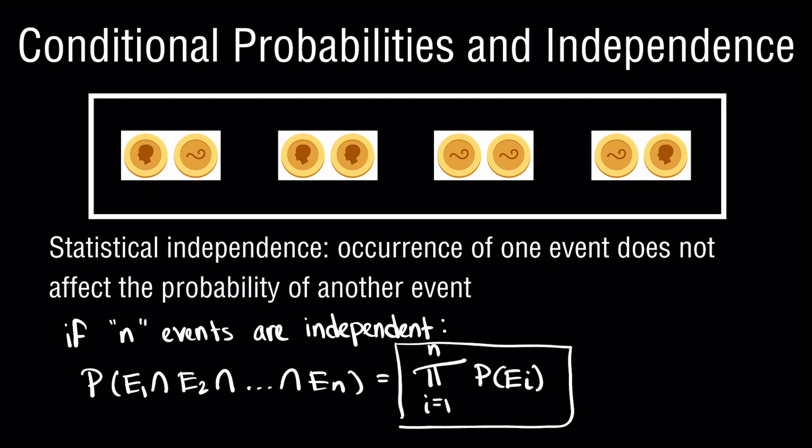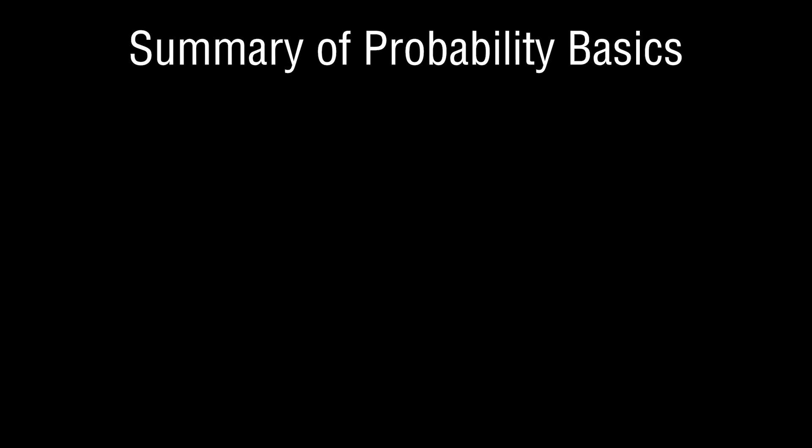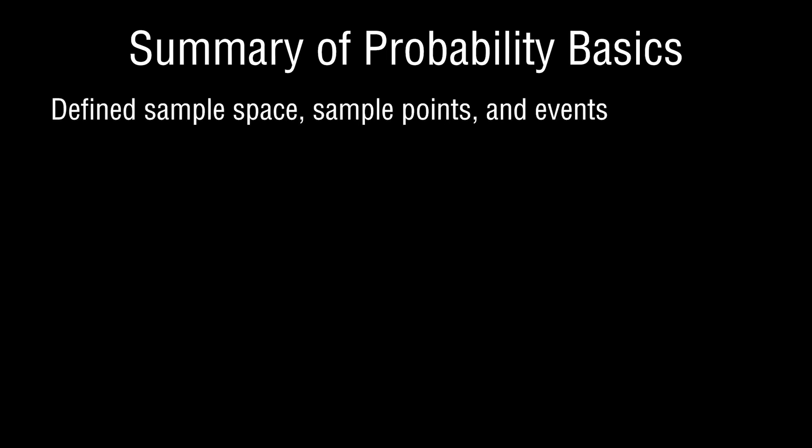You've likely worked this out mentally yourself — if someone asks what's the chance of getting heads two times in a row, intuitively you'd say a quarter. But the way you were able to do that was by making a strong assumption: statistical independence. We can generalize this so that if we have n events and assume they're independent, then the joint occurrence of all those events is simply the product of their marginal probabilities.